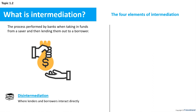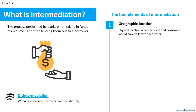There are four main reasons why both individuals and companies need the services of intermediaries, relating to the following factors. Geographic location: a physical location problem where lenders and borrowers would have to locate each other and may be restricted to their own area or circle of contacts, not being aware of others outside of that, but they may have easy access to a branch of a high street bank.